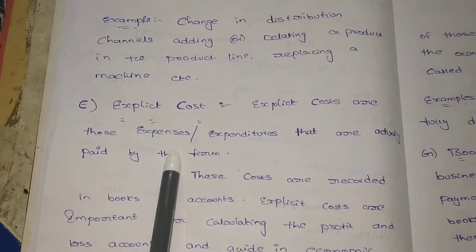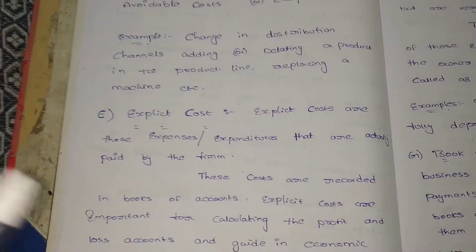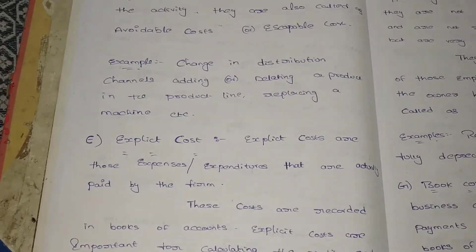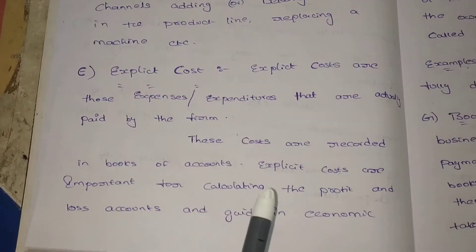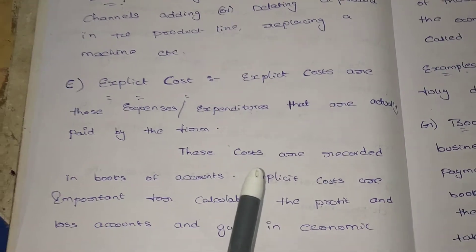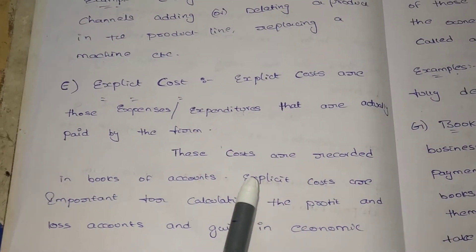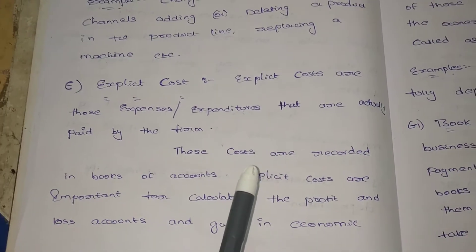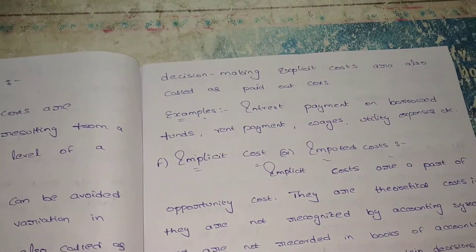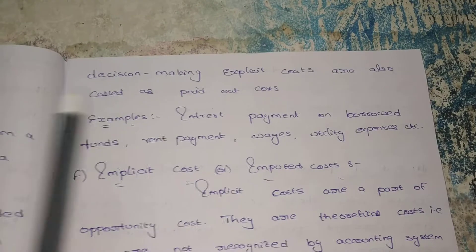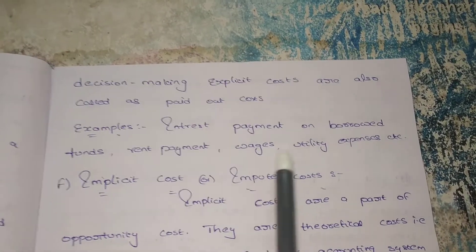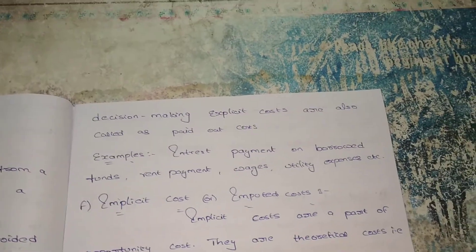Explicit costs are those expenses actually paid by the firm to others, recorded in the books of accounts, important for preparation of financial statements and decision making. Examples include: interest paid on borrowed funds, rent payment, wages, utility expenses, and other direct expenses.